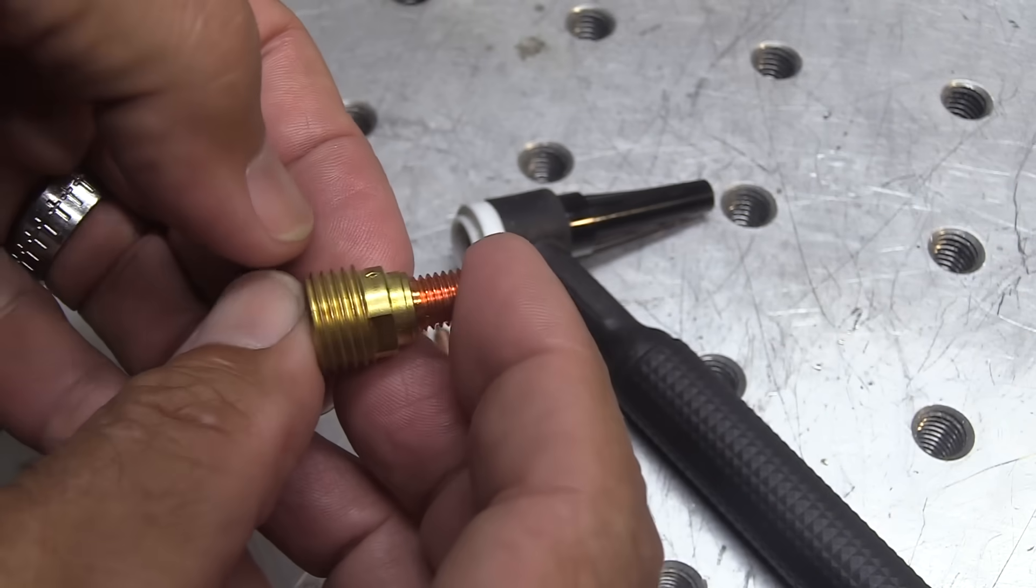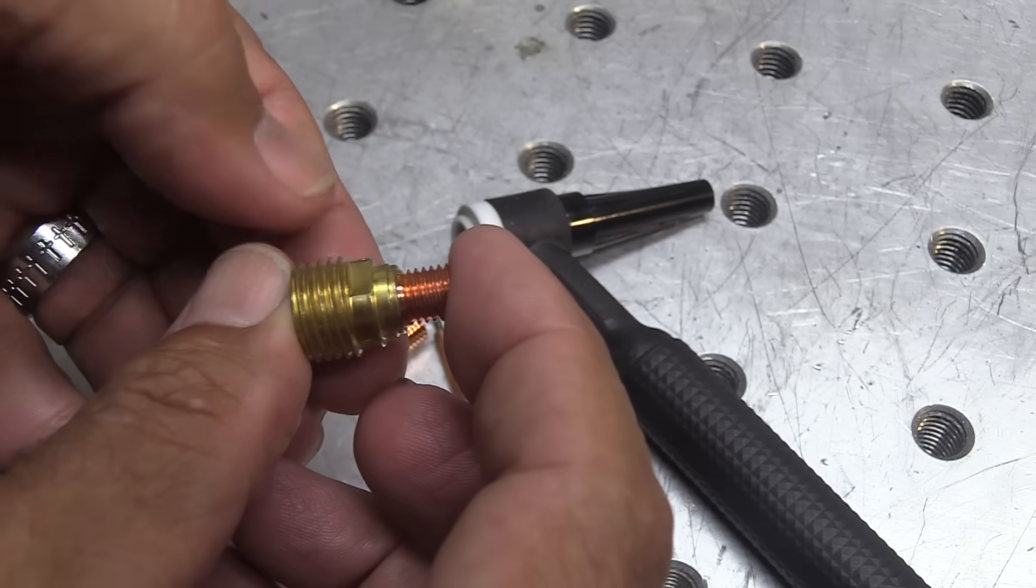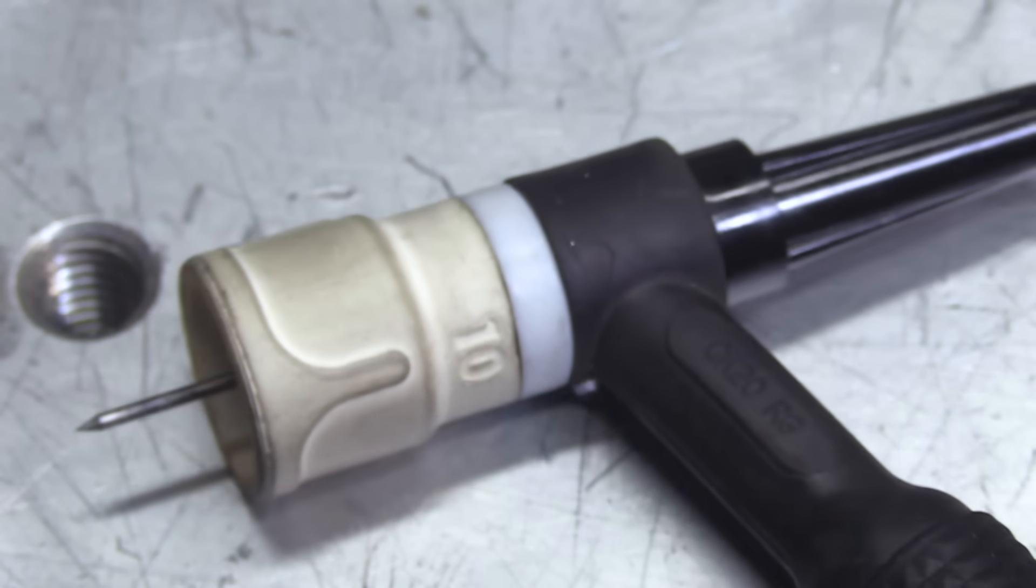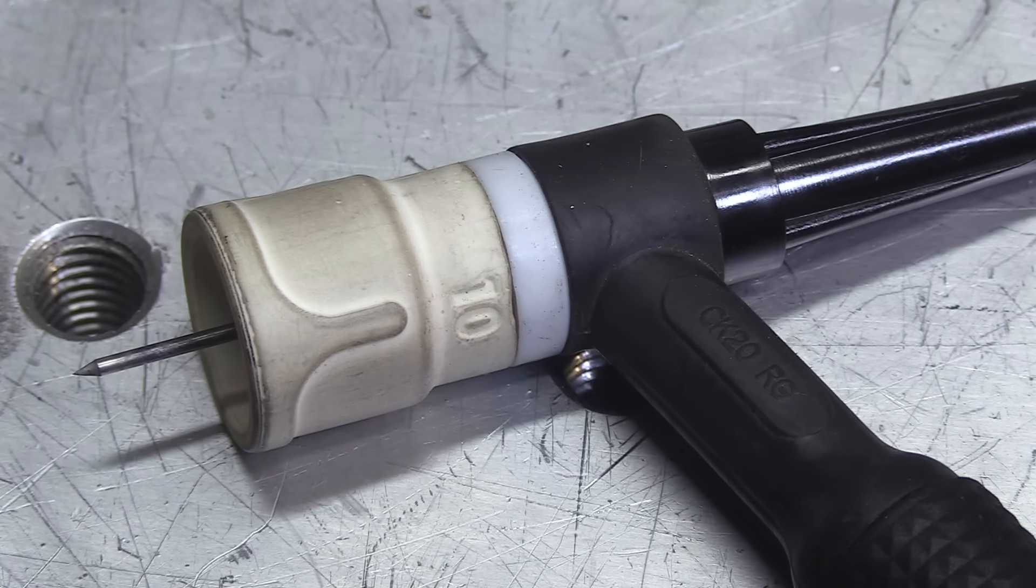If you have a number 9 or a 20 style torch that uses little small hardware like this that's only about 7/8 of an inch long, this is a 45V44 part number. All you need is the Jazzy 10 and you're good to go—screws right on just like a regular gas lens cup. Gives you way better shielding though.